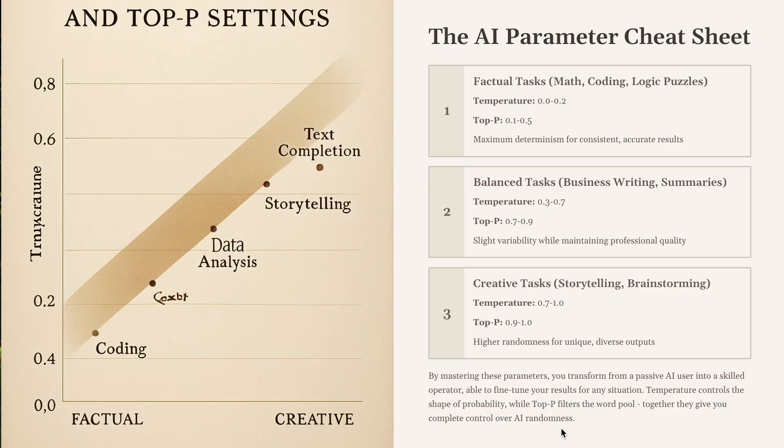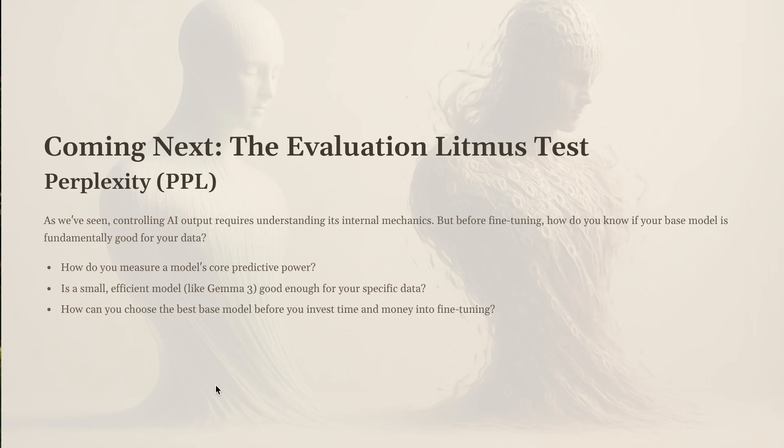You now have the complete toolkit. Temperature controls the shape of the probability curve — making it spiky for facts or flat for creativity. Top P controls the size of the word pool being considered. By combining them, you can move from being a simple user to being a true AI operator. Here's your playbook — you now know how to control the randomness of an AI's response.